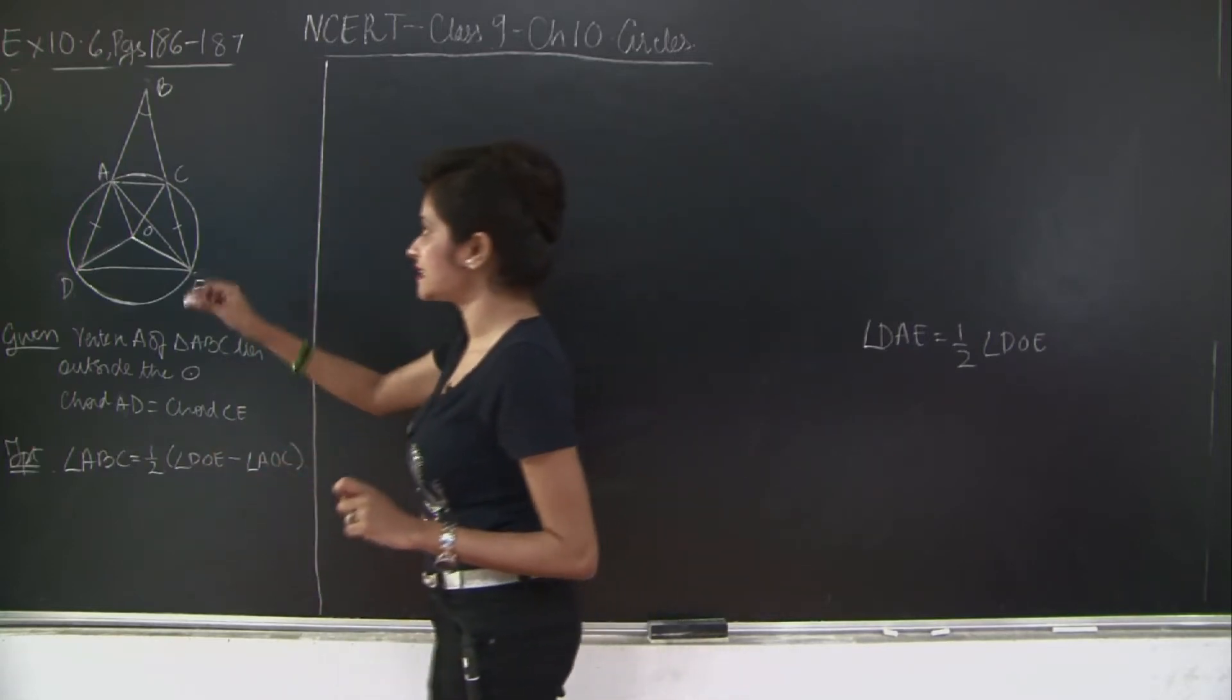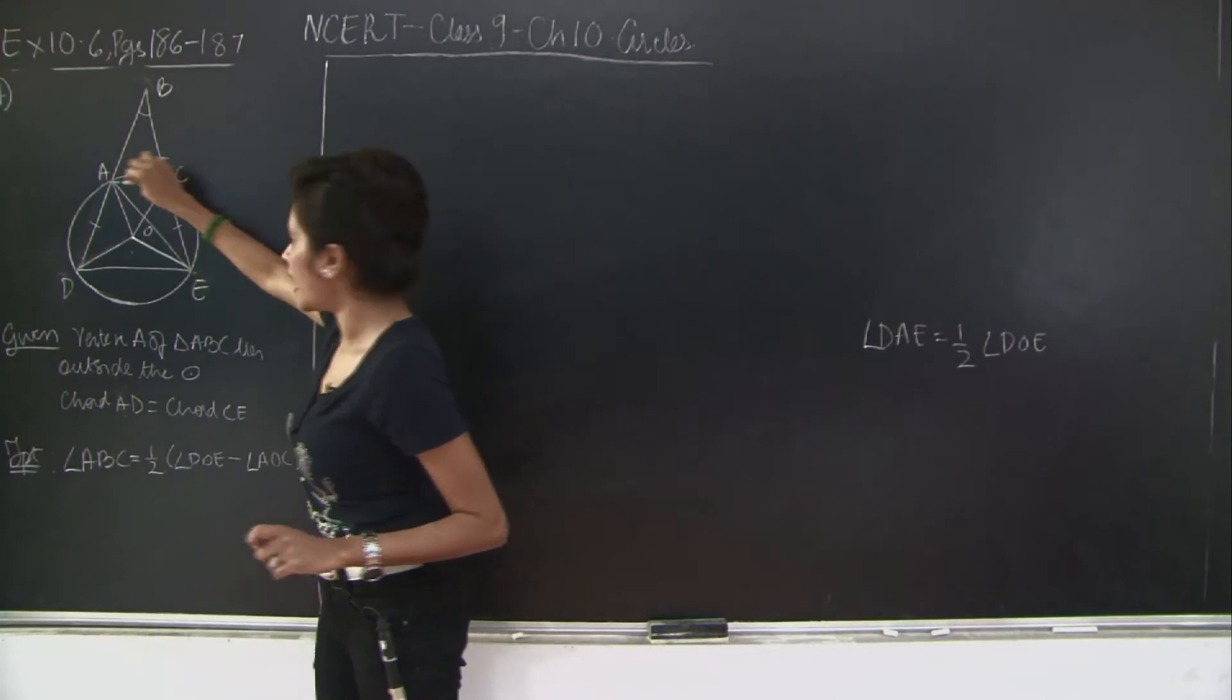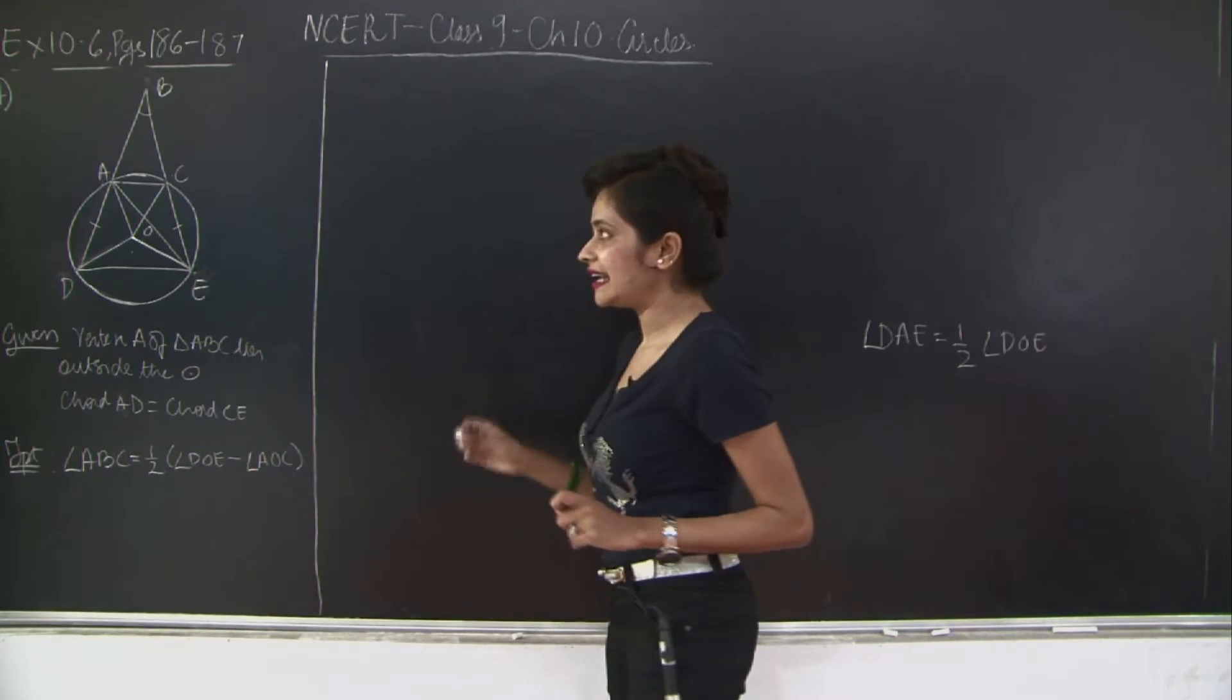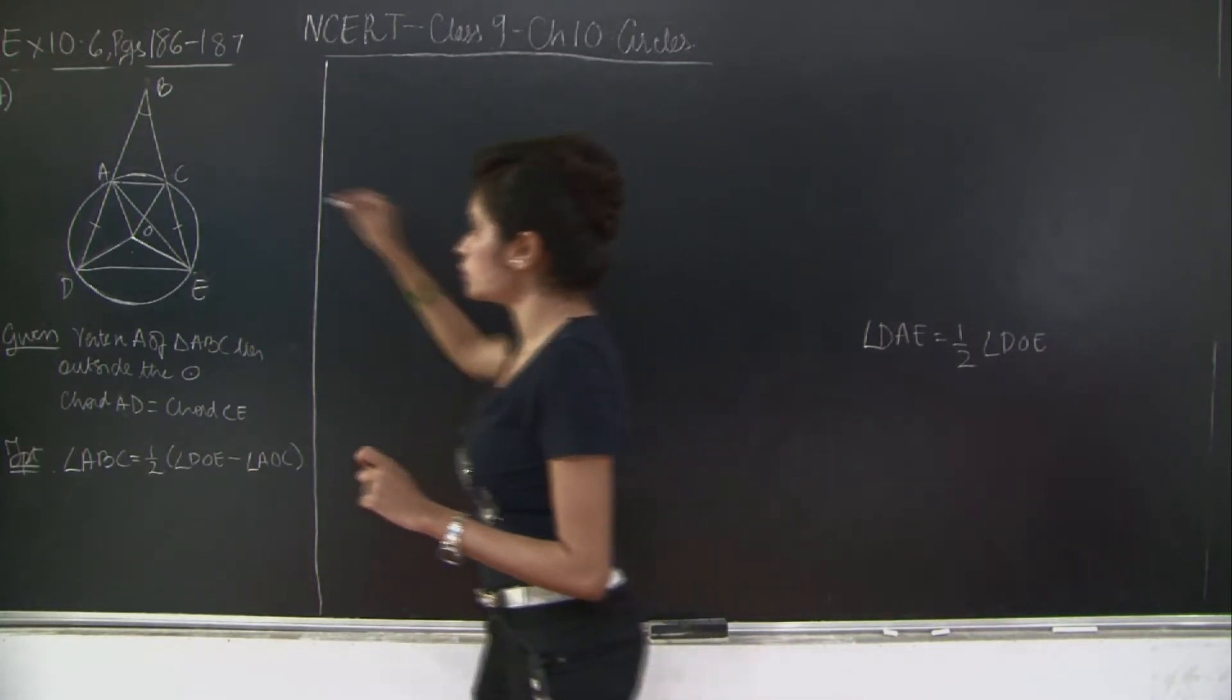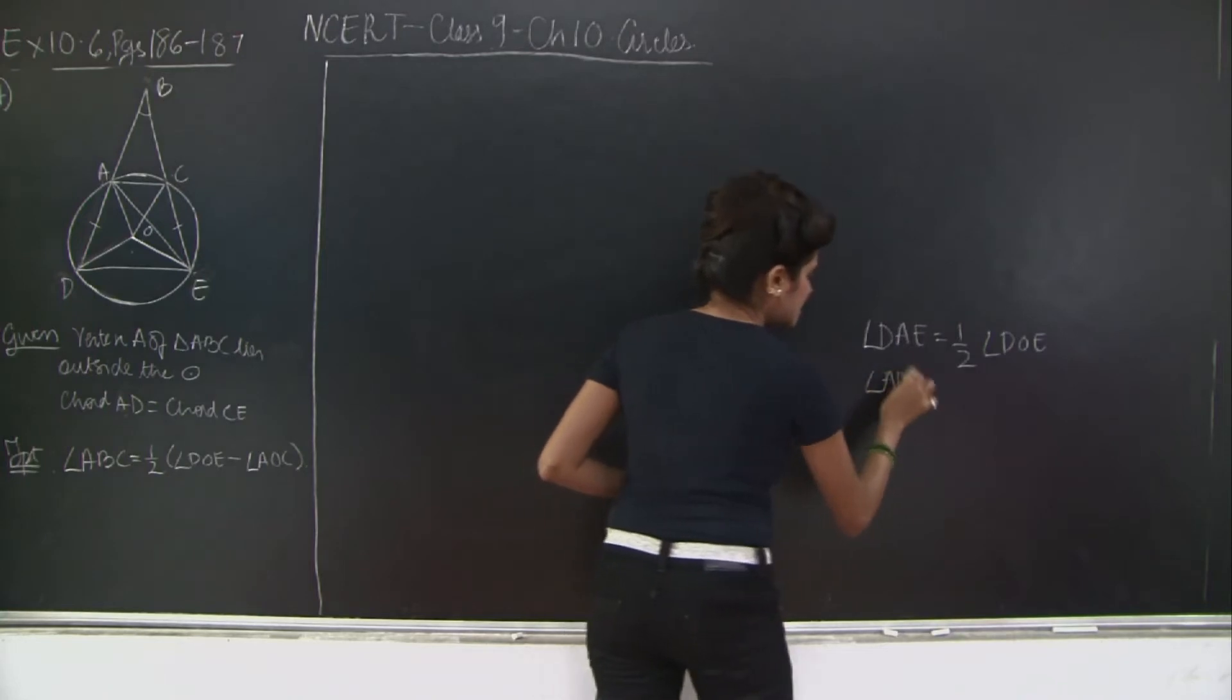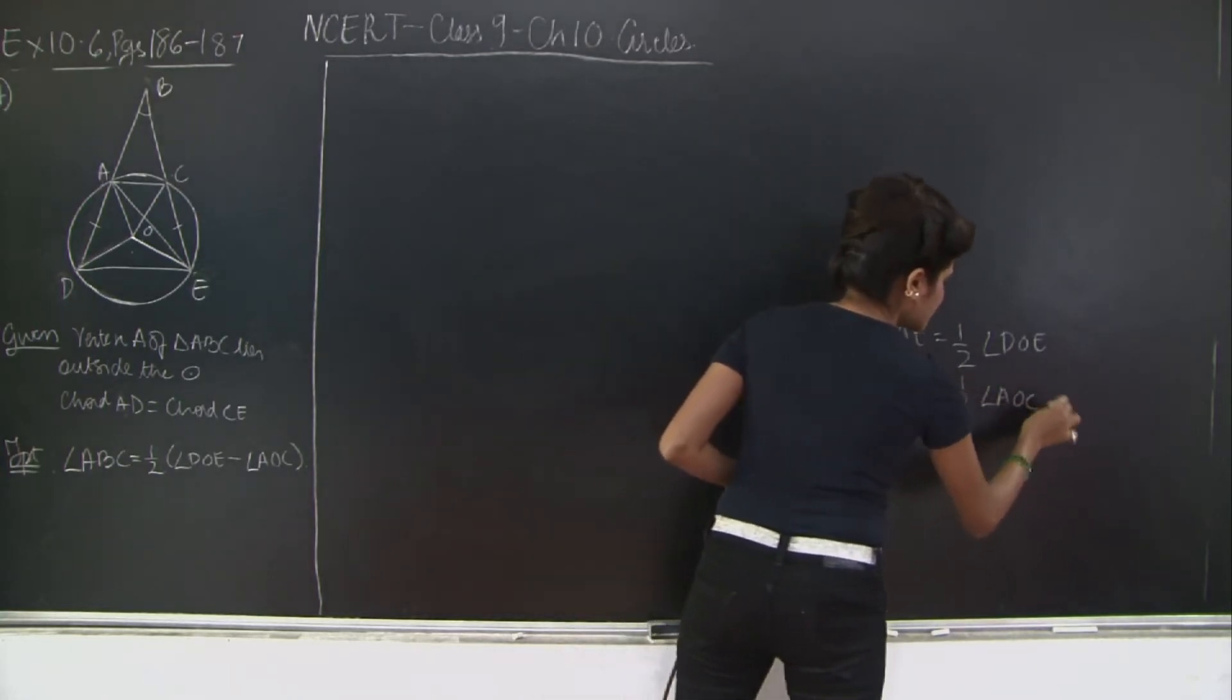Because the angle subtended at the centre of the circle is twice the angle subtended at the circumference. Similarly, if you take a look at AC, AC is subtending angle AOC at the centre and AEC at the circumference. Therefore, again, what do you get? Angle AEC is equal to half angle AOC.